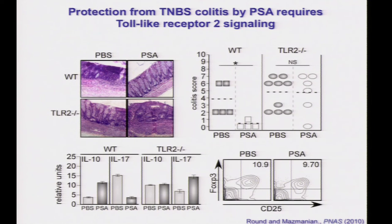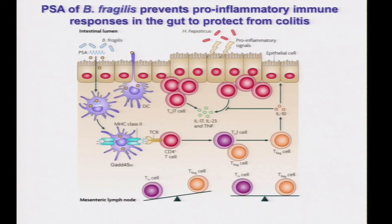This notion of regulatory T cell induction appears to be quite broad across several organisms. Going back to PSA, we characterized the signaling pathways. TLR2 is clearly very important. In wild-type mice untreated versus treated with PSA, we see clear protection. In TLR2 knockout animals, we see no protection. In wild-type animals, PSA induces interleukin-10 and suppresses IL-17; we see no such phenotype in TLR2 knockouts. Regulatory T cell proportions are not increased in TLR2 knockouts. We know that TLR2 on both the dendritic cell and the T cell is important for these anti-inflammatory effects.